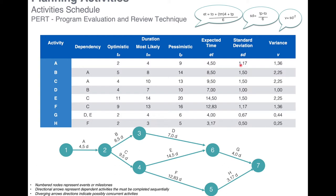Then we calculate the standard deviation. We find it by subtracting the optimistic (2) from the pessimistic (9), giving us seven, then dividing by six. This gives a standard deviation of 1.17. The variance is the square of the standard deviation: 1.17 × 1.17 = 1.36.